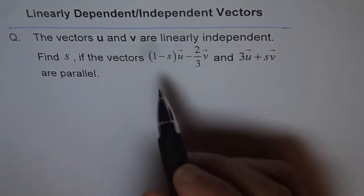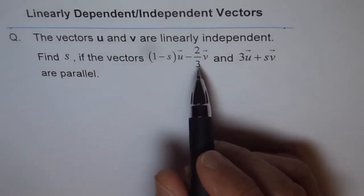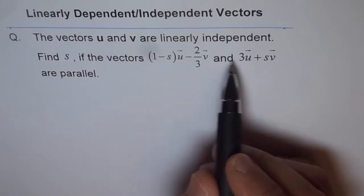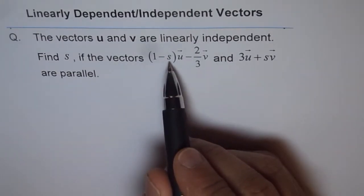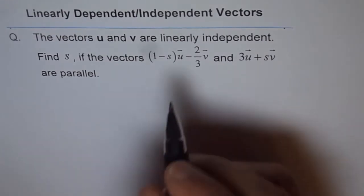We have got a combination here, different kind, and we need to show that if this is parallel, then what is the value of s. So, let's try to solve this.